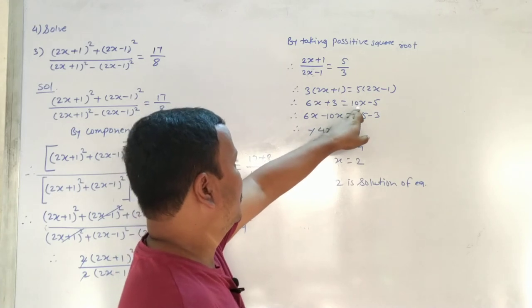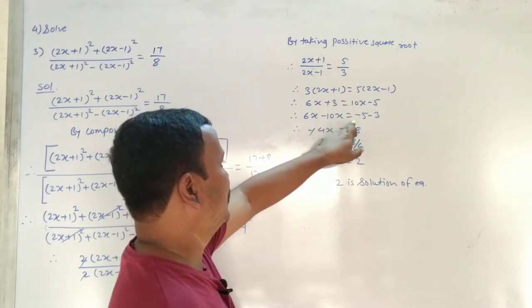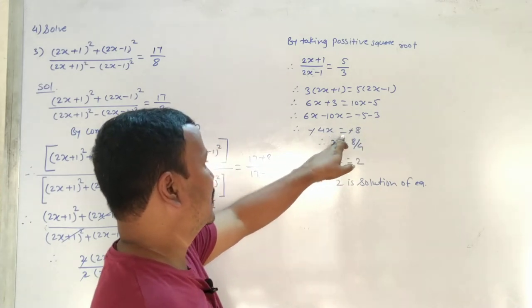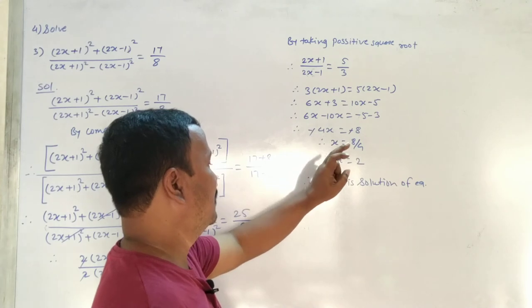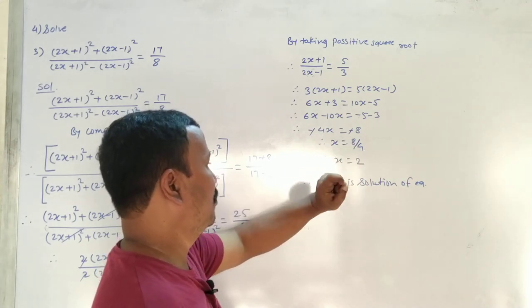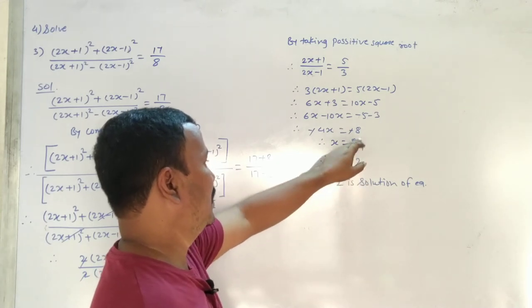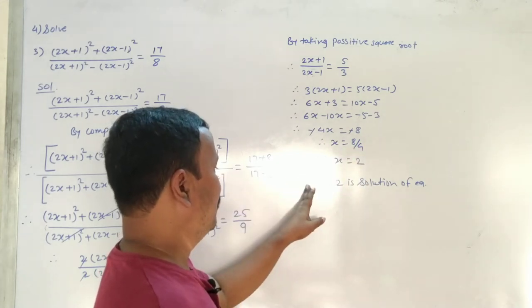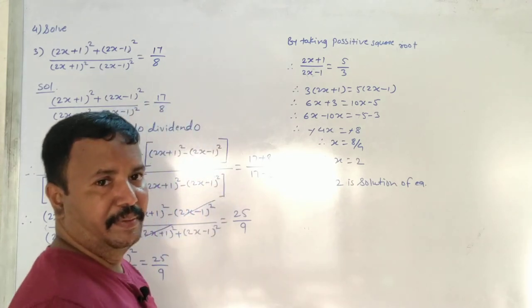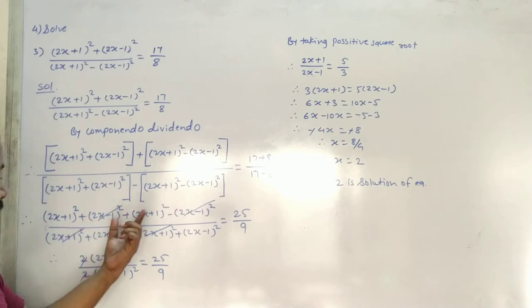Now rearranging: 6x - 10x is equal to -5 - 3, so -4x is equal to -8. Therefore x is equal to 8 upon 4, and therefore x is equal to 2. So x = 2 is the solution of the equation.